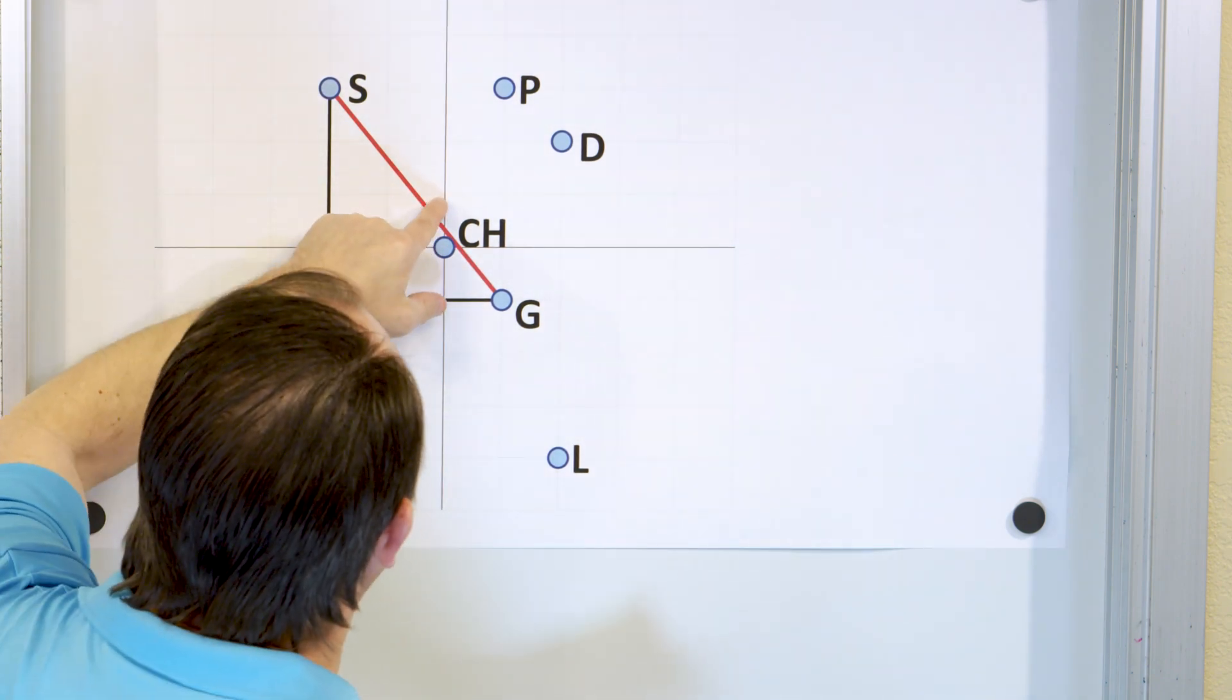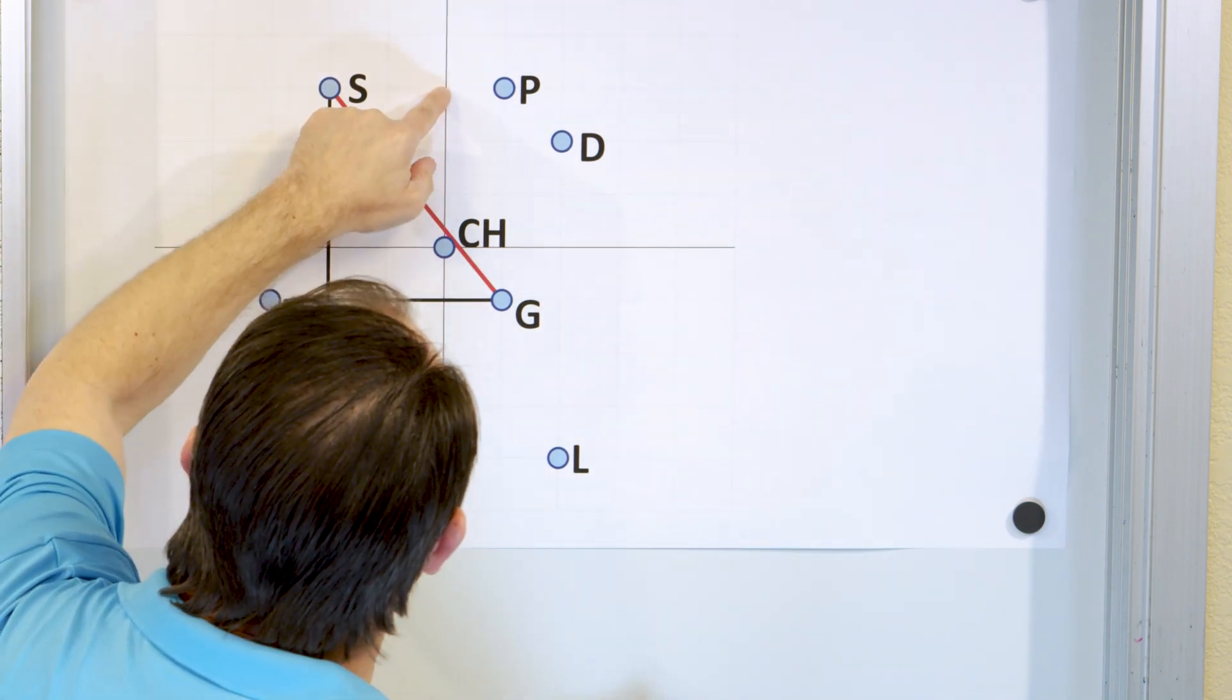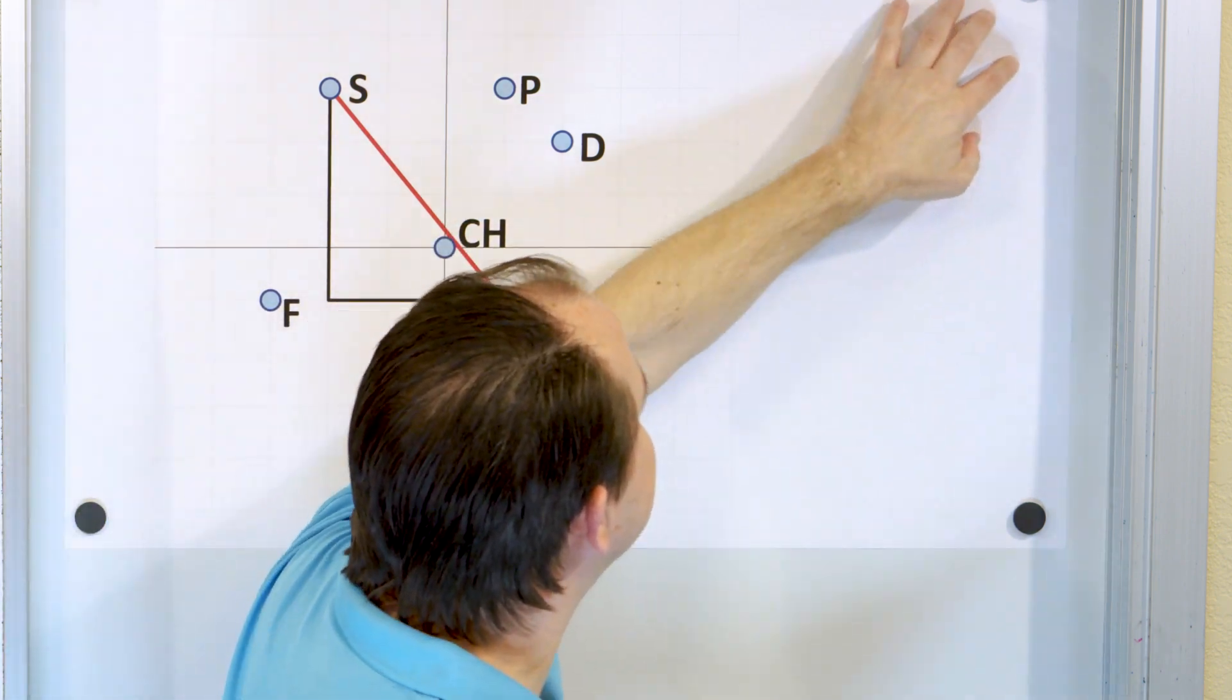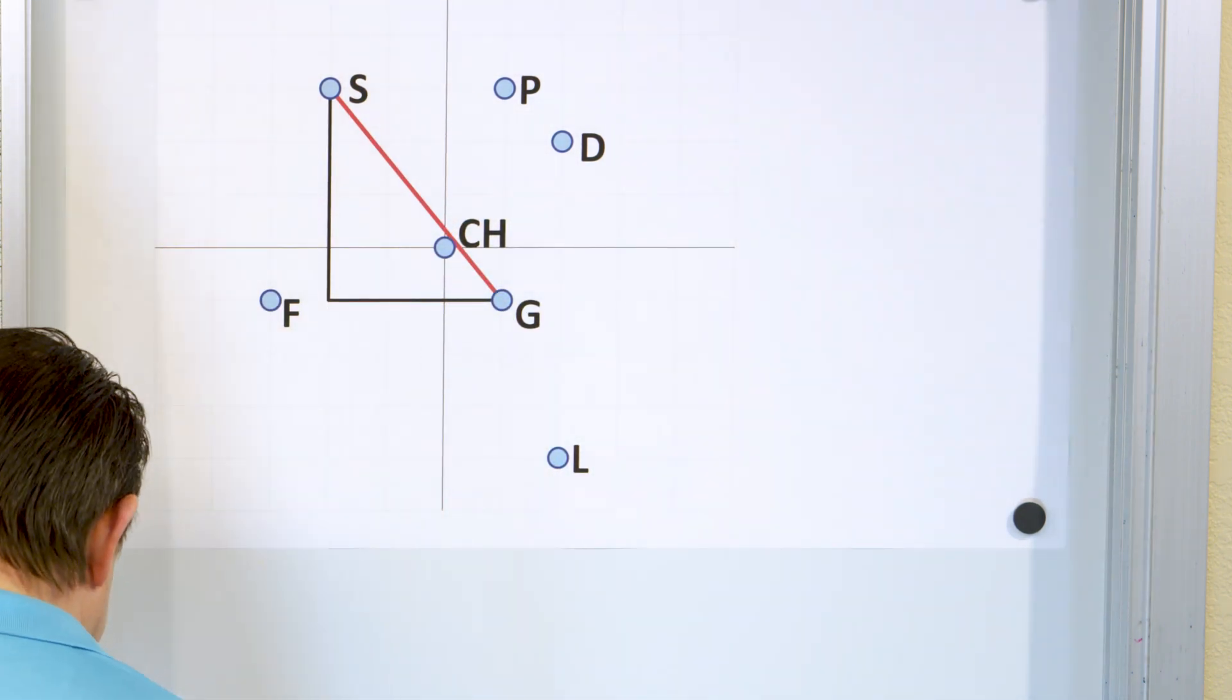Or you might think of these being city blocks. So it'd be like one block, two blocks, three blocks up or whatever, whatever units you're dealing with. So how do we figure out what this is?